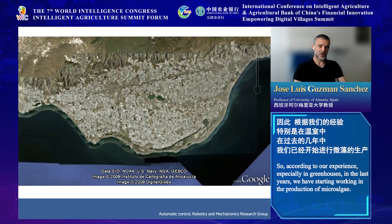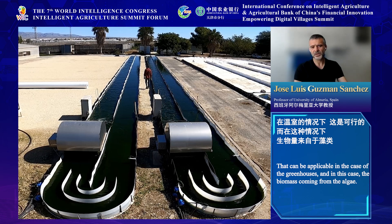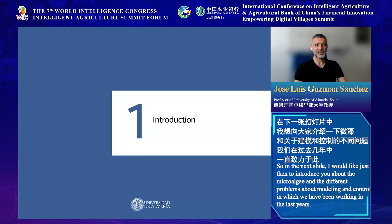According to our experience especially in greenhouses, in the last years we have started working in the production of microalgae, because somehow they are quite similar to greenhouse production — especially regarding the photosynthesis process and also regarding the hierarchical control approach when you want to optimize the growth rate of a specific plant. That can be vegetables in the case of greenhouses, and in this case it is the biomass coming from the algae.